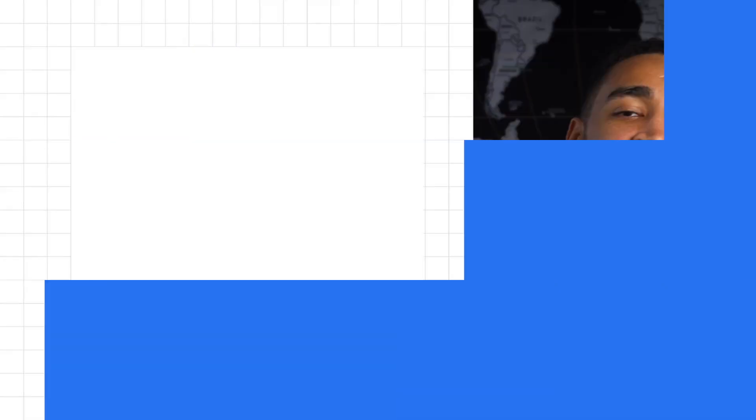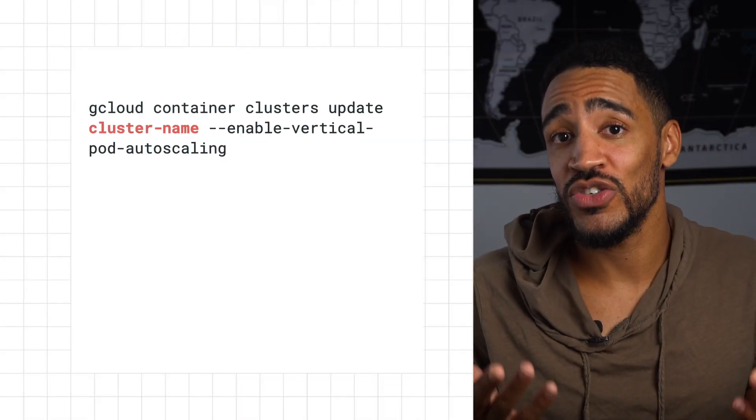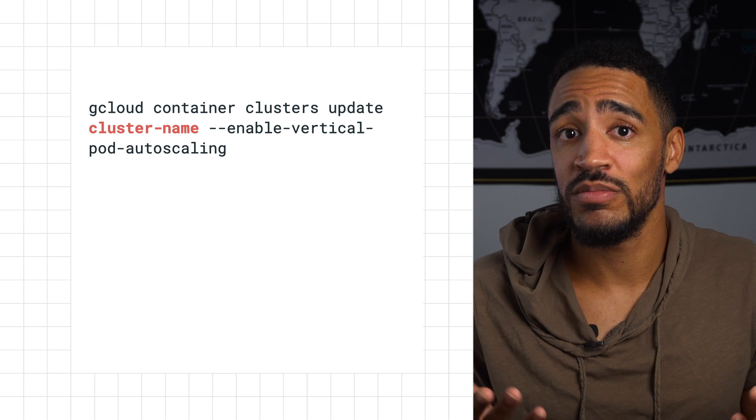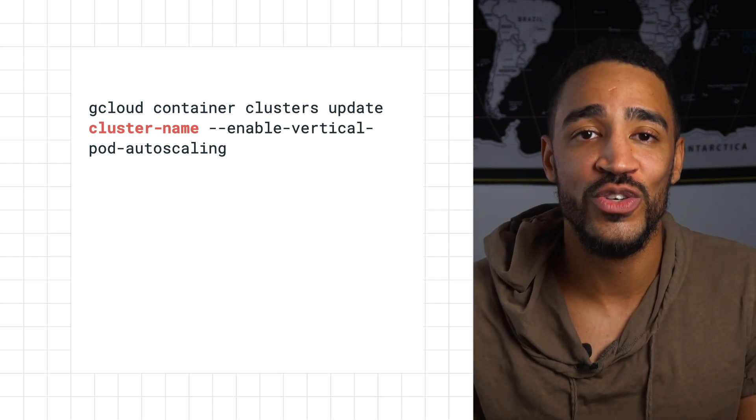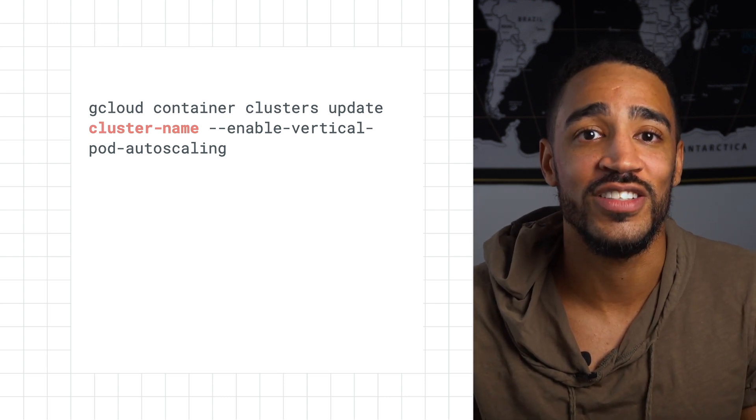That's where GKE's Vertical Pod Autoscaler comes in. The Vertical Pod Autoscaler exists to automatically set up-to-date resource limits and requests for the containers in their pods. It can both downscale pods that are over-requesting resources and also upscale pods that are under-requesting resources based on their usage over time. This seemed like a good fit for Critter Junction's problem, so we helped them enable the Vertical Pod Autoscaler on their cluster.